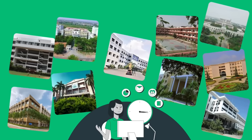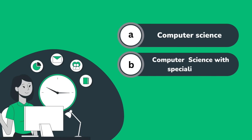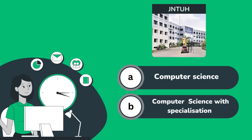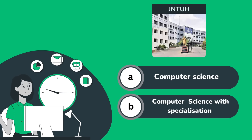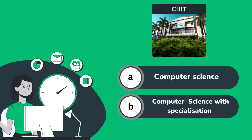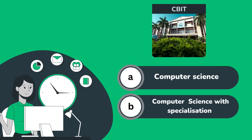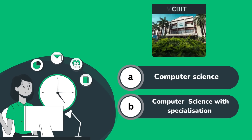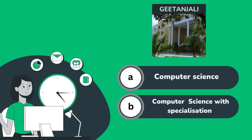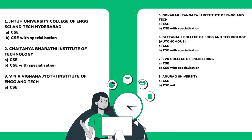In these colleges, you have computer science and computer science with specialization. So let's look at it. JNTU Hyderabad first — that includes computer science and computer science specialization. After that, next is CBIT — computer science and computer science specialization. That's why you have computer science and computer science specialization as a follow-up order.